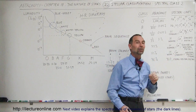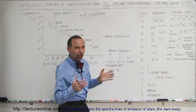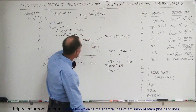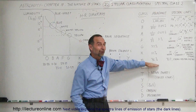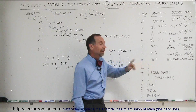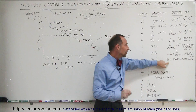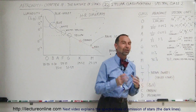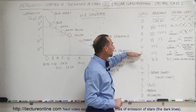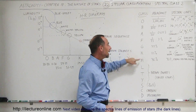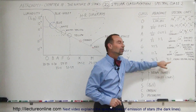In K-class stars, the neutral metal lines are much stronger than in G-class stars. And finally, for the small red stars at the bottom of the main sequence — the M-class stars — about three-quarters of all the stars in the universe fall in this category. We recognize them because their spectrum shows titanium oxide lines, and the neutral metal lines are very strong, just as in K-class stars. What differentiates M from K is the appearance of titanium oxide in the spectral lines.